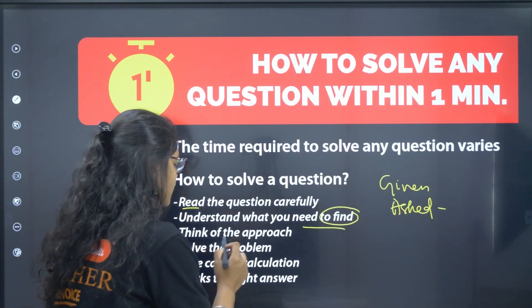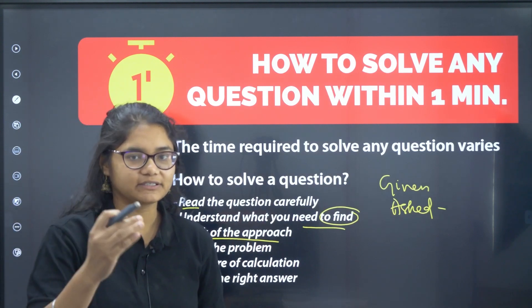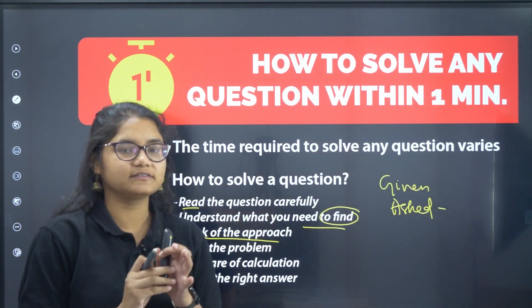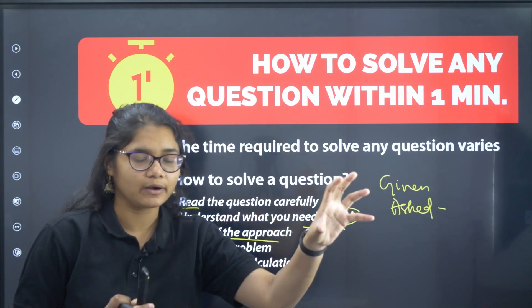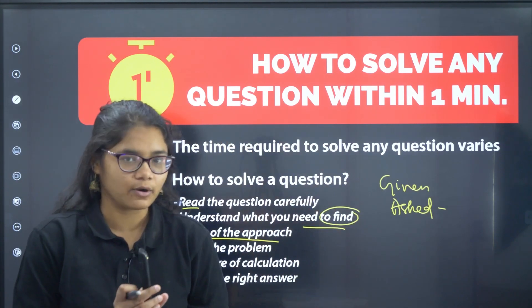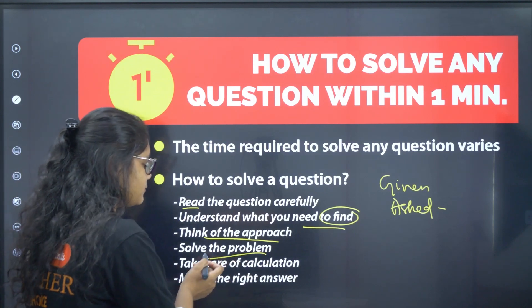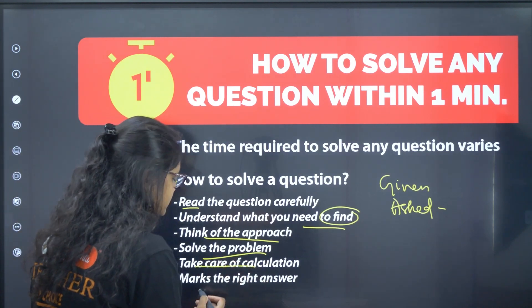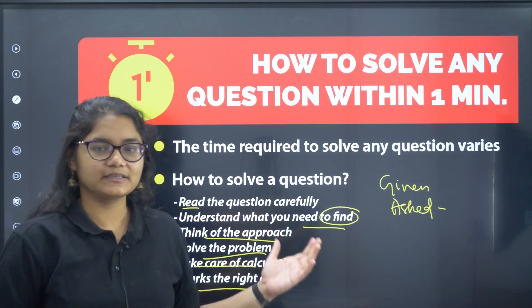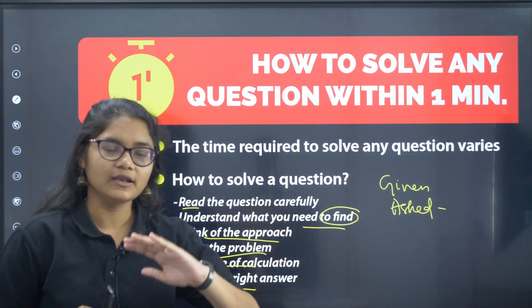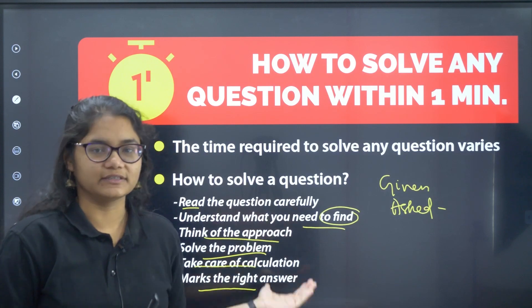Next, think of the approach — what formula to apply, which calculation to do. Sometimes a direct formula cannot be applied; you have to find one quantity first and then another. Think of the approach, solve the problem, take care of the calculation, and then mark the right answer. This is the basic approach any student follows from day one.